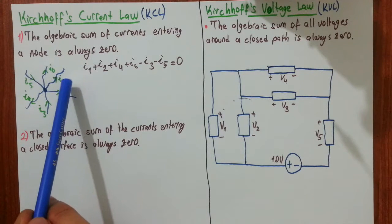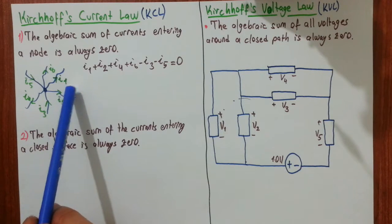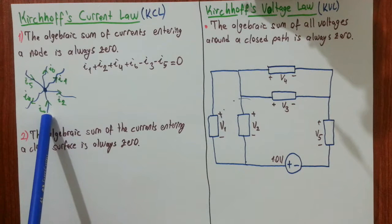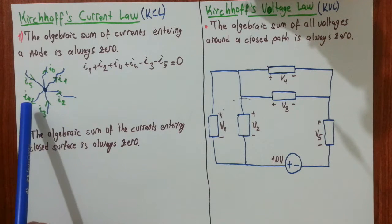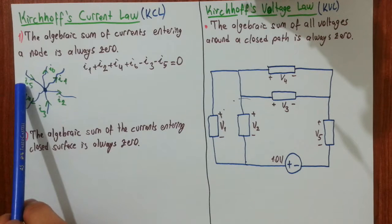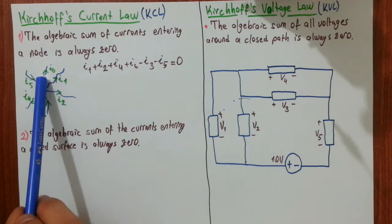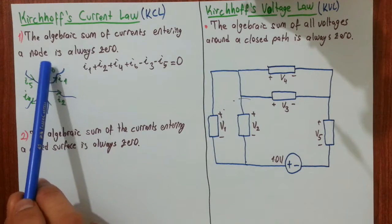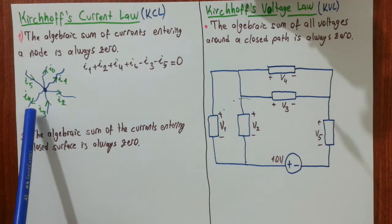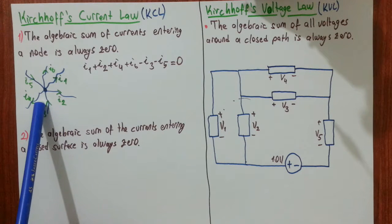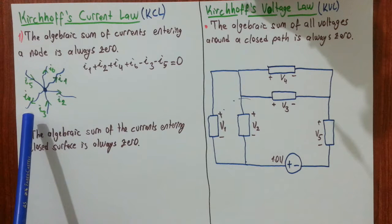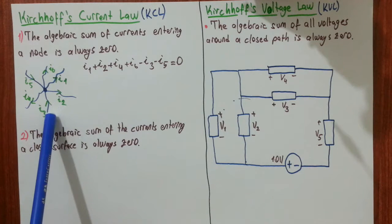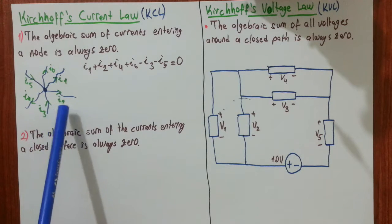So I1 is leaving this node, I2 is leaving this node, I3 is entering the node, I4 is leaving, I5 is entering, and I6 is leaving. If you sum the entering and leaving currents on the same side, what you get is zero.